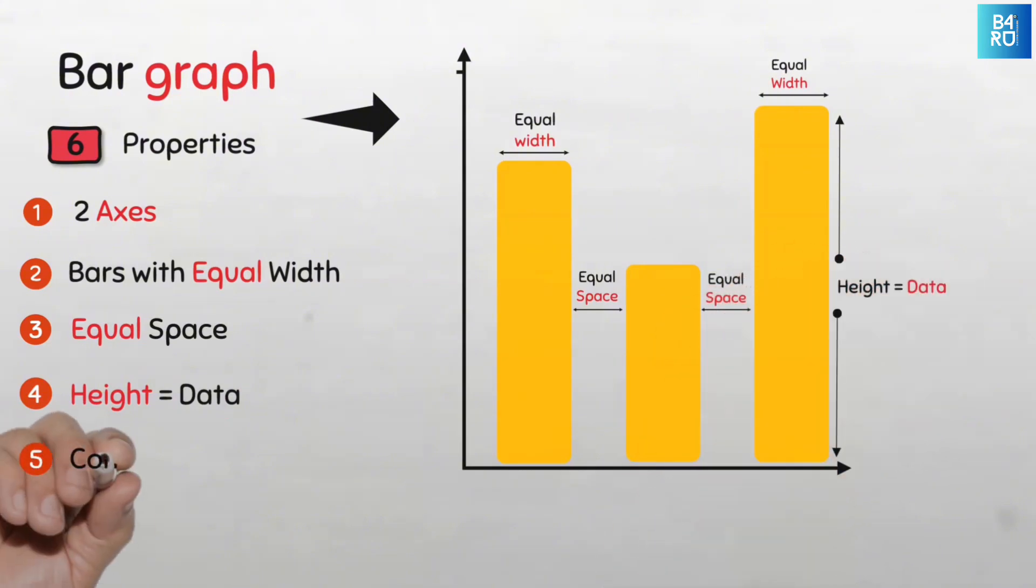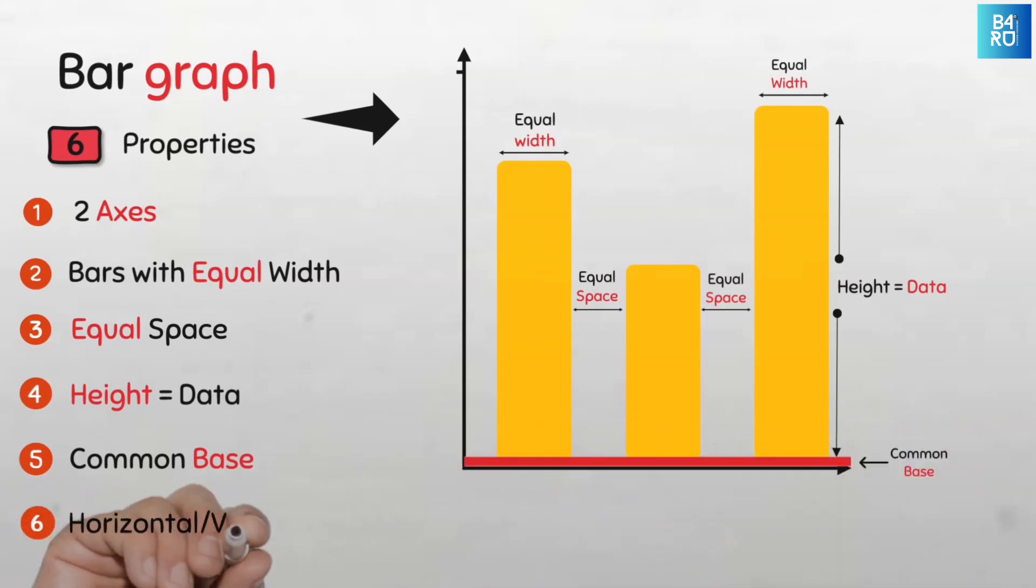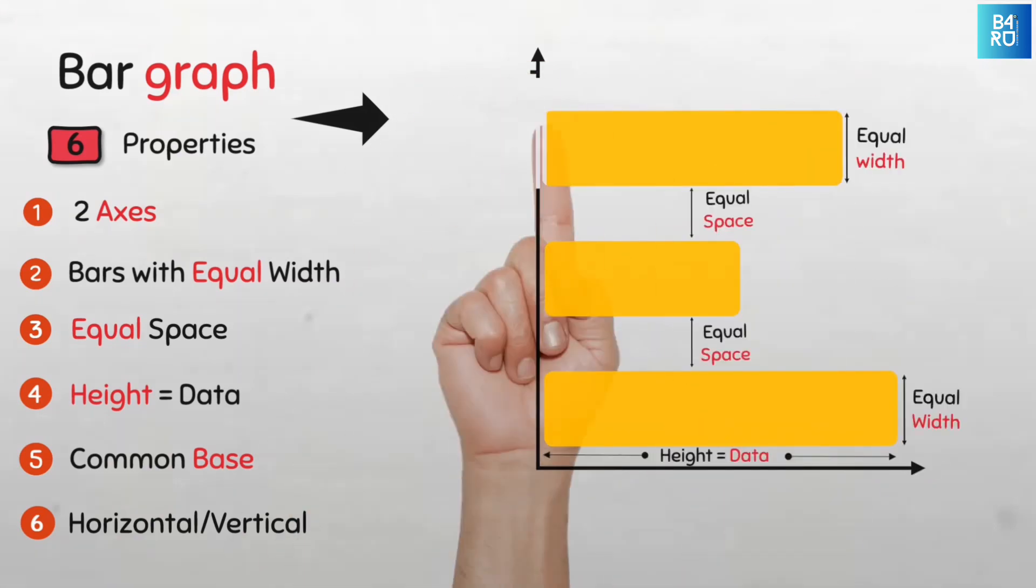Number five: the bars must always be on a common base. And finally, the bars can be drawn either vertically like we have here or horizontally like this. Easy peasy!